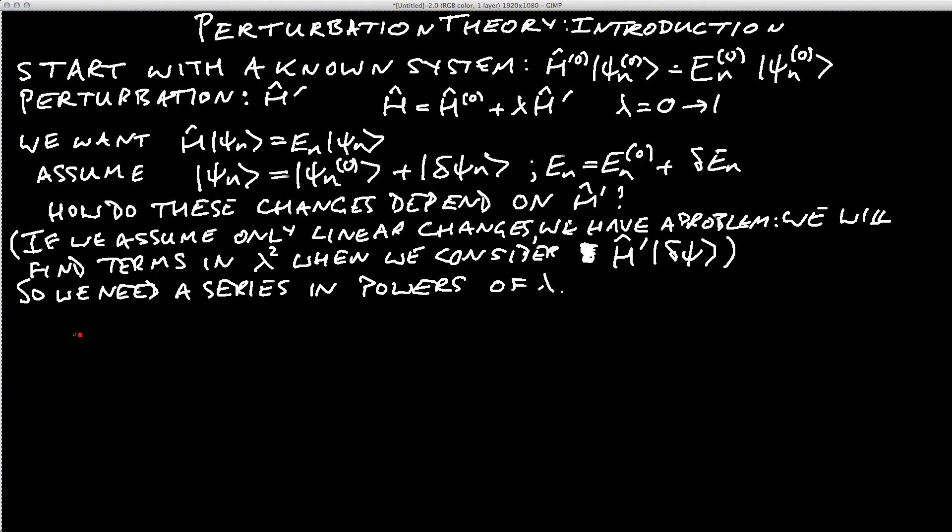So now let's come back to the series expansion. We write ψₙ equal to ψₙ⁽⁰⁾ plus λψₙ⁽¹⁾. The notation here means ψₙ⁽¹⁾ is that part of the change proportional to λ. Then we have λ²ψₙ⁽²⁾ and carry on like that.